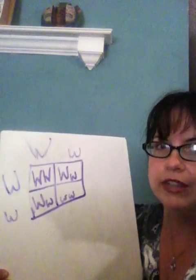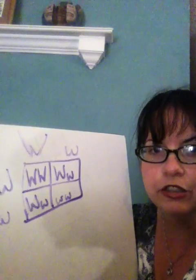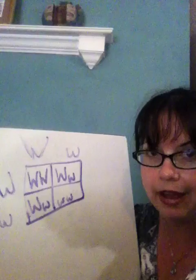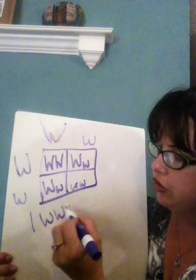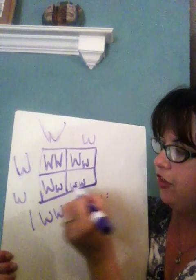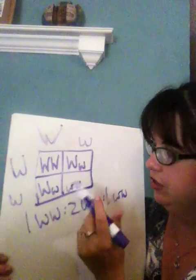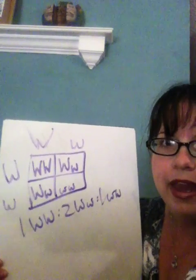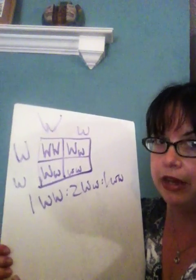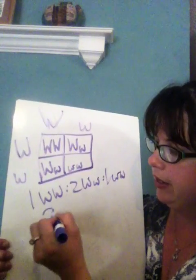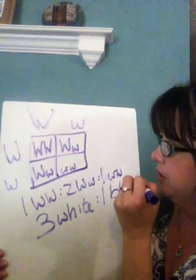What always happens when you cross two heterozygous parents together is that you'll get a one to two to one genotypic ratio, which would be the letters. You'll get one homozygous dominant, two heterozygous, and then one homozygous recessive — it's a one to two to one ratio. And then your phenotypic ratio will always be three to one: three white fur to one black fur, which is little w, little w.